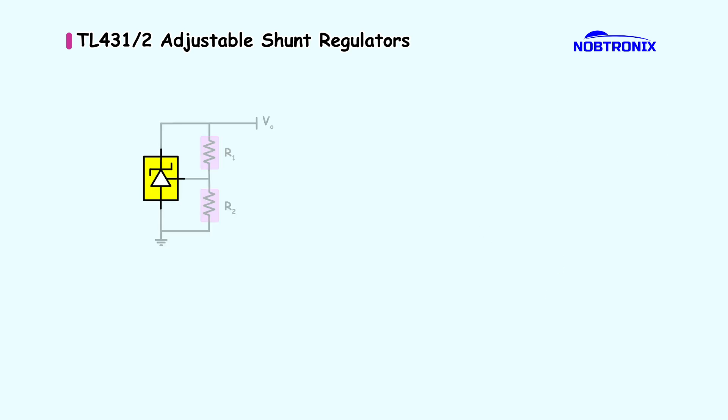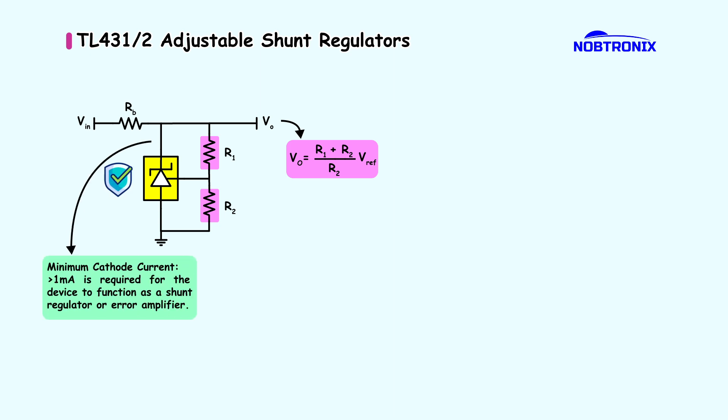Here, a voltage reference circuit built using the TL431. Two resistors form a feedback network to set the output voltage, while another resistor limits current. For proper operation, the TL431 requires a minimum cathode current of 1 mA, and the cathode-to-anode voltage must not exceed 36V.